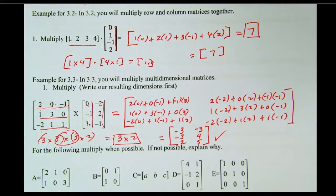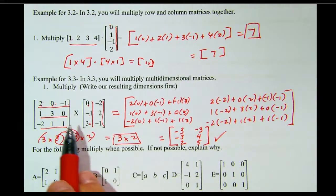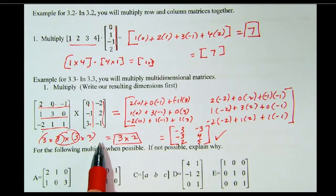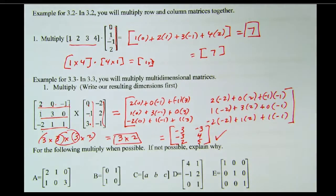So remember a couple things. First of all, to multiply, these two dimensions have to be the same. And then the first matrix you go across with. Second matrix you go down with. And make sure that you write this thing out.